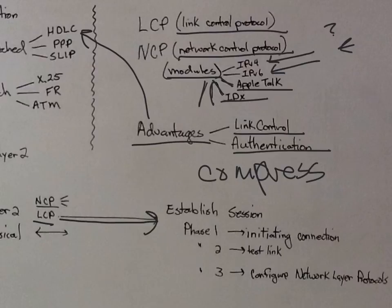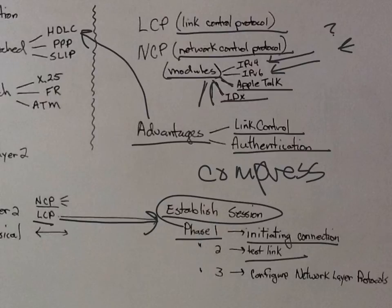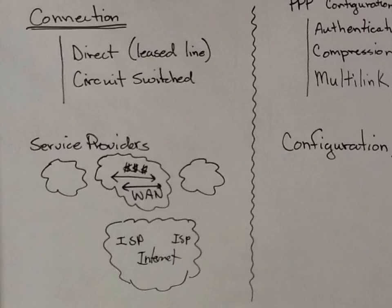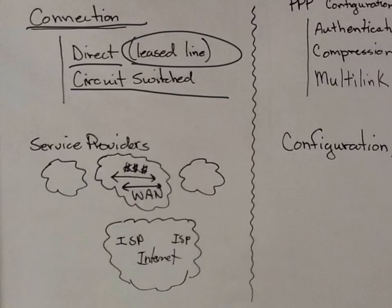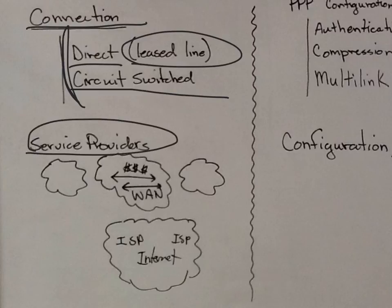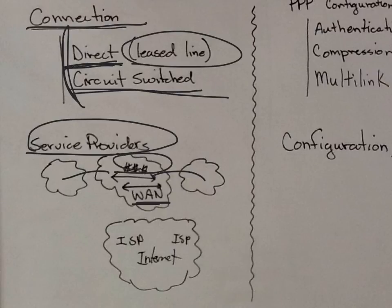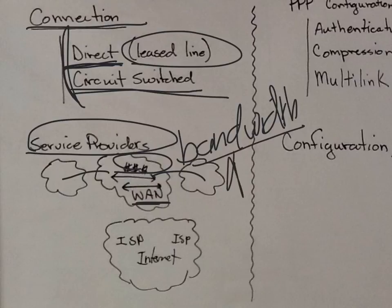Link control protocol is going to establish a session, and we have those phases: initiate the connection, make sure the link is good, and then configure the network layer protocol. There are steps to make that connection. We talked about direct or circuit-switched leased lines — connecting into the service provider creates your WAN. Depending on the bandwidth you want and how guaranteed it is, you can use a direct circuit-switched line.